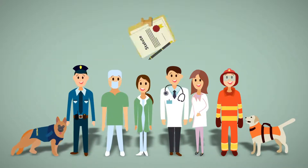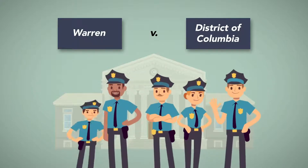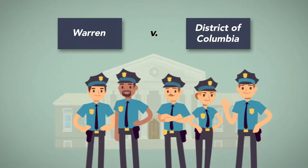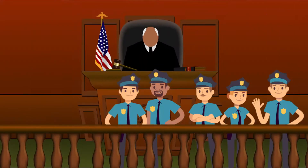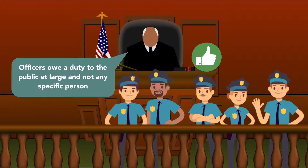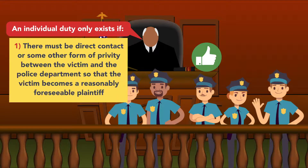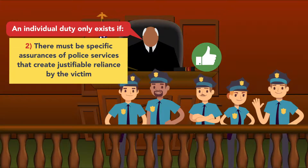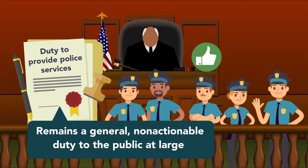First responders may also have a duty to act, with certain statutory limitations. A federal appeals court in Warren v. District of Columbia explored the duty of police officers to act to prevent harm to a citizen. The lawsuit alleged that members of the D.C. Metropolitan Police Department failed to provide adequate police services. Finding in favor of the police department, the Court of Appeals ruled that officers owed a duty to the public at large and not any specific person. An individual duty only exists if, first, there must be direct contact or some other form of privity between the victim and the police department, so that the victim becomes a reasonably foreseeable plaintiff. Second, there must be specific assurances of police services that create justifiable reliance by the victim. Without both of these elements, the duty to provide police services remains a general, non-actionable duty to the public at large.